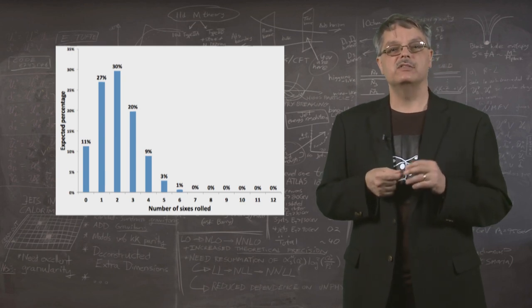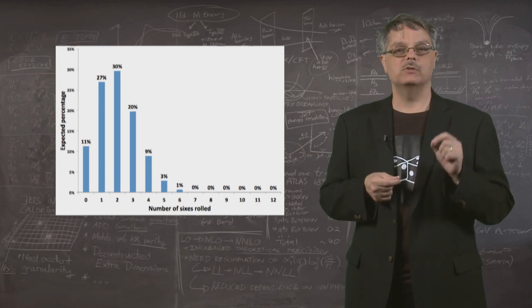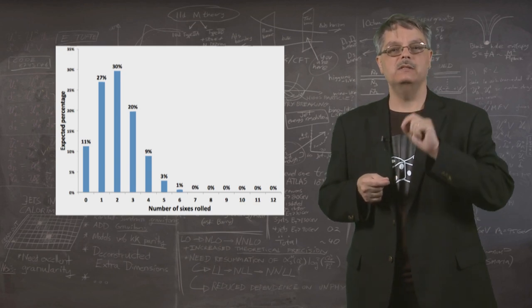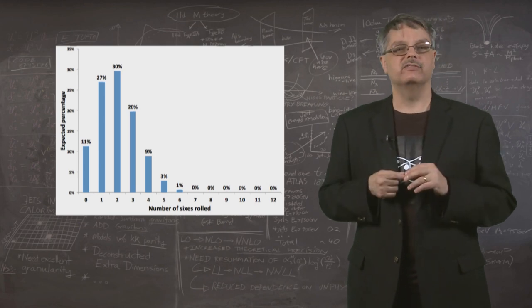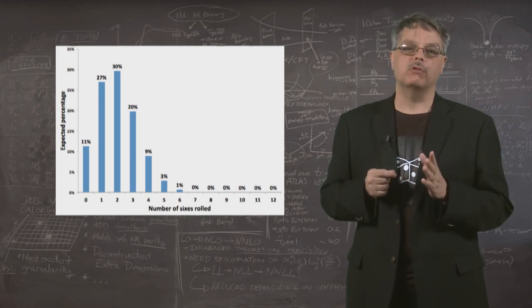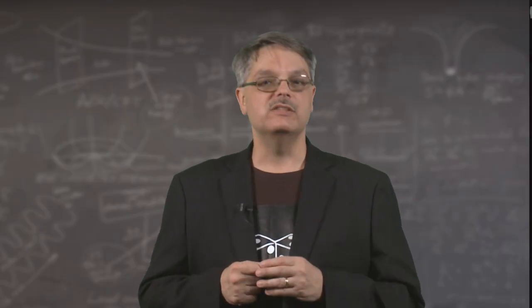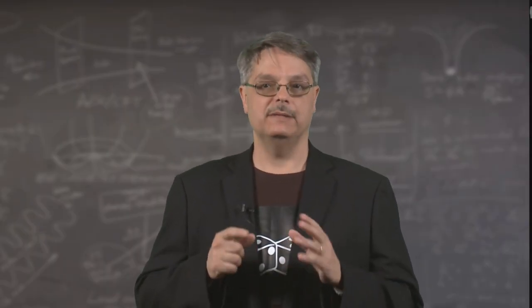In contrast, there is only a 0.008 percent chance of rolling 10 sixes or more. That's unlikely enough that it's reasonable to believe that it probably didn't happen by chance. If you've listened to the news, you might have heard the term sigma.